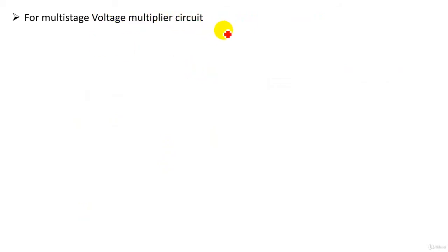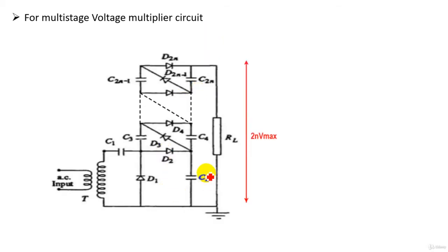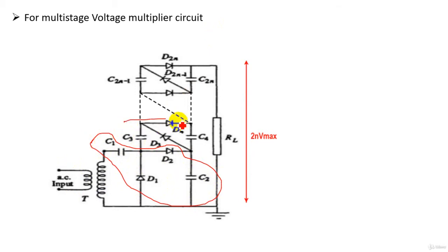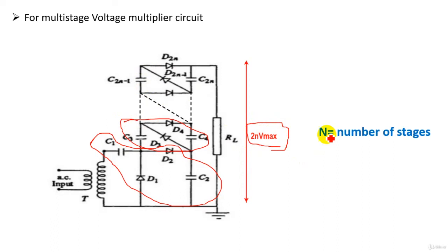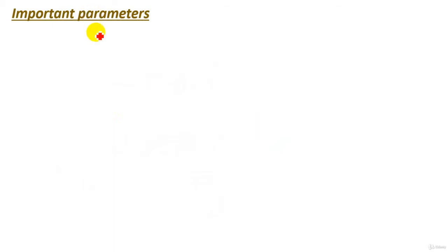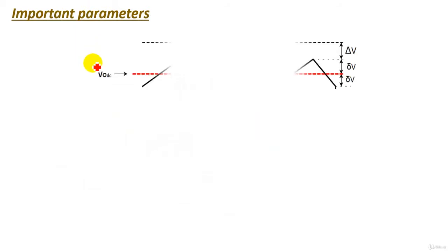For multi-stage voltage multiplier circuits with more than three stages, we use the same circuit but extend it with more stages. After the high voltage transformer, we have the first stage, second stage, and we can continue adding many stages. The output voltage in this general case is 2nV maximum, where n is the number of stages used.